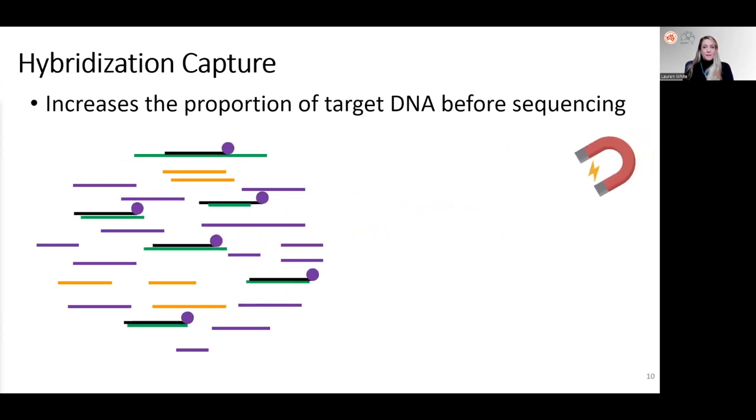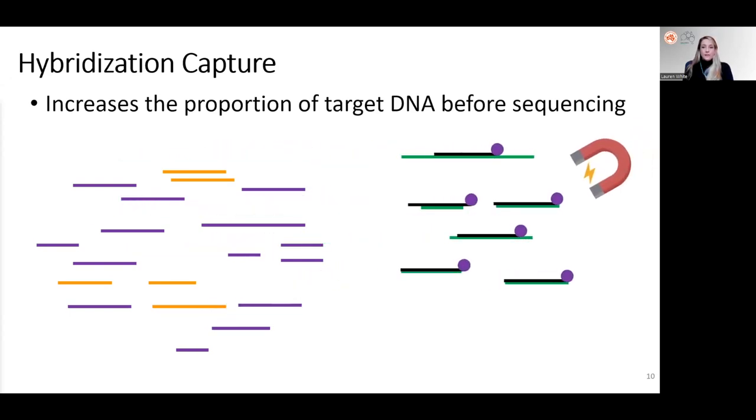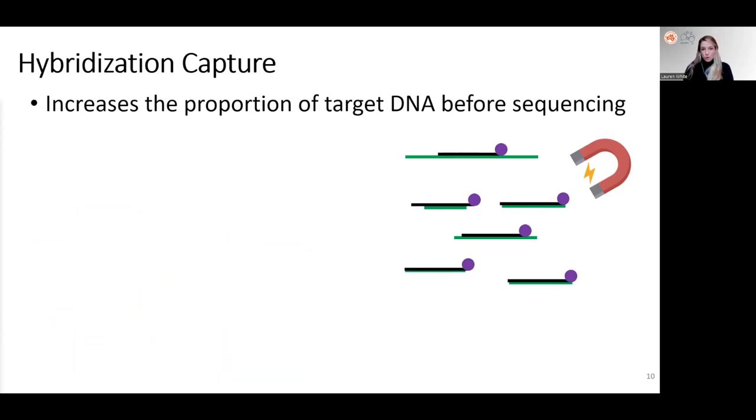They use modified DNA or RNA baits that are complementary to the target region which will bind to the target DNA in an extract and then can be immobilized in a variety of ways. Here we're using magnets allowing the non-target DNA to be washed away.